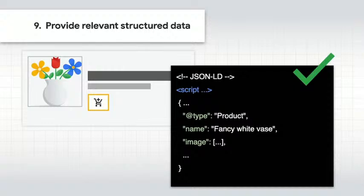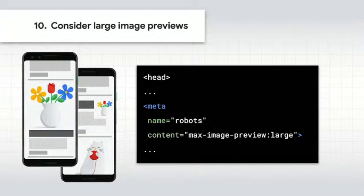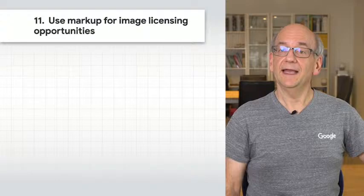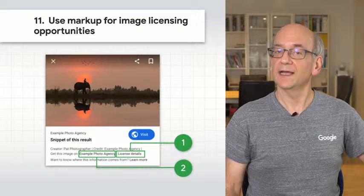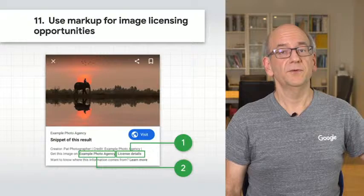We have information about all kinds of structured data in our developer documentation. Consider allowing large image previews — including compelling, high quality images in your content is more likely to generate visits from Discover. For large image previews, the images need to be appropriately sized and the feature needs to be enabled either with the max-image-preview large robots meta tag or by using AMP. When providing images, add licensing information. This helps users to understand the opportunity to license images, show appropriate image credits, and makes it easier for them to acquire a license. This can be done with structured data on the page or metadata within the image.